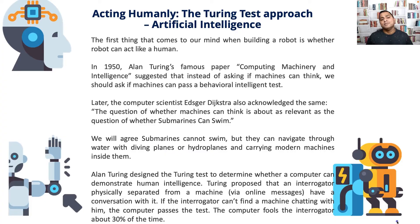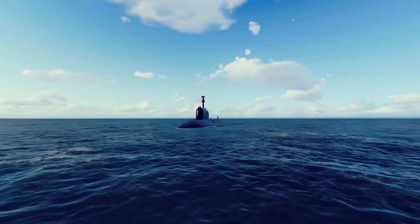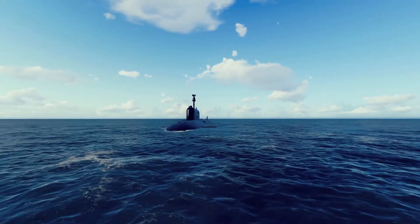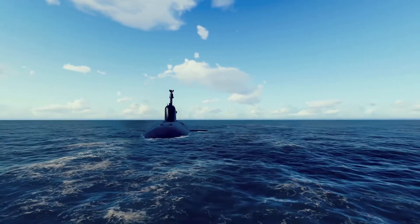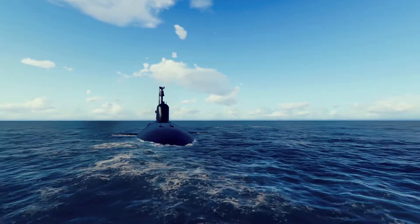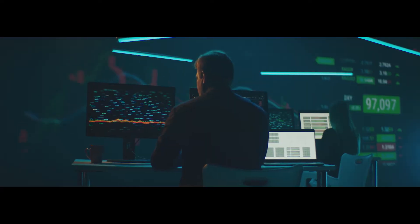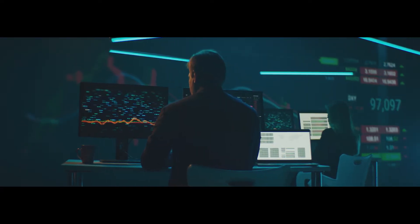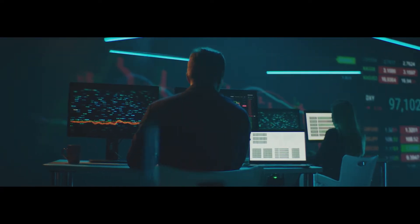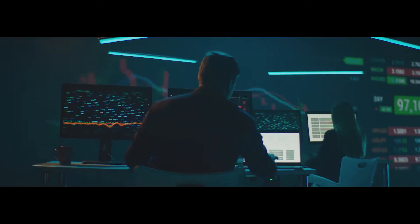We will agree that submarines cannot swim, but they can navigate through water using diving planes or hydroplanes and carrying modern machines inside them. Alan Turing designed the Turing test to determine whether a computer can demonstrate human intelligence. Turing proposed an interrogator physically separated from a machine via online messages, having a conversation with it. If the interrogator can't find out a machine is chatting with them, the computer passes the test.